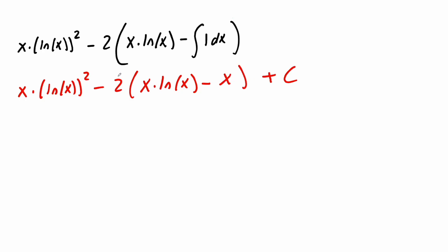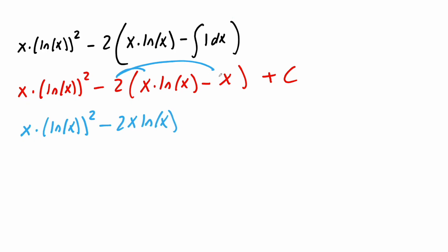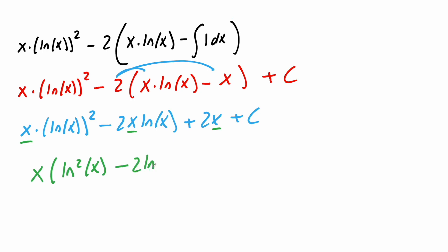Now let's expand: negative 2 times each piece. So we have x·(ln(x))² minus 2x·ln(x). Negative 2 times negative x is positive 2x, plus C. Each piece has an x, so we can factor it out: x·(ln²(x) minus 2·ln(x) plus 2) plus C. This is our final answer.